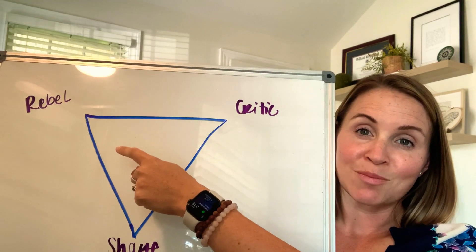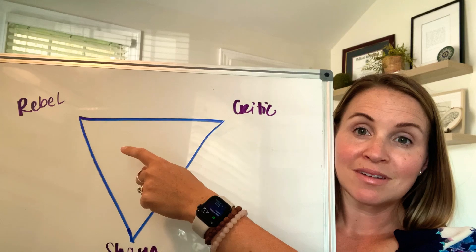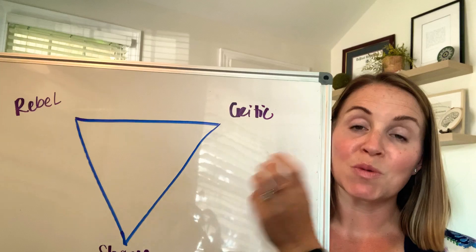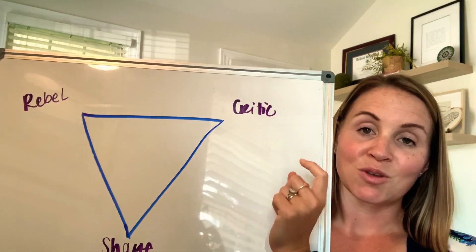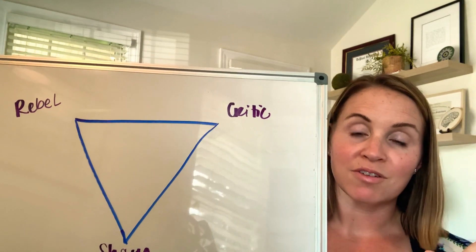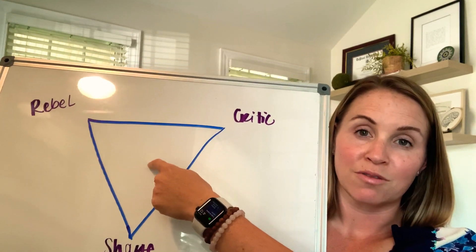We have to recognize our maladaptive coping mechanisms and we have to work on ways to find healthier coping mechanisms, but we're never going to do that until we address this relationship and then eventually provide enough clarity in which we can fall into the center of the triangle.